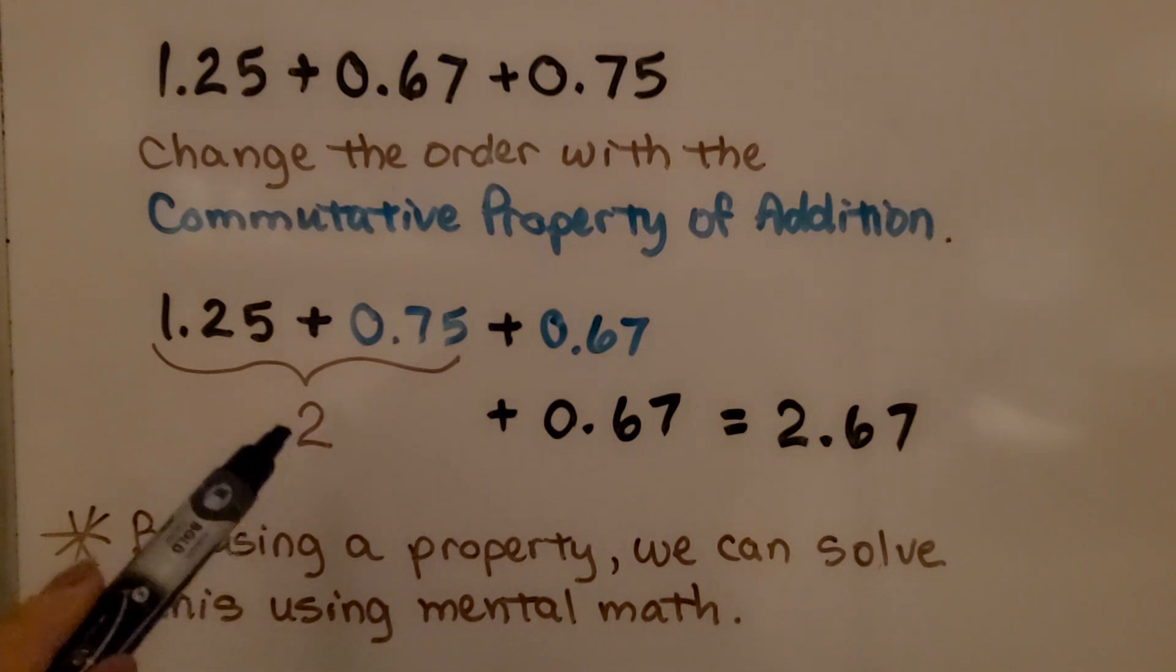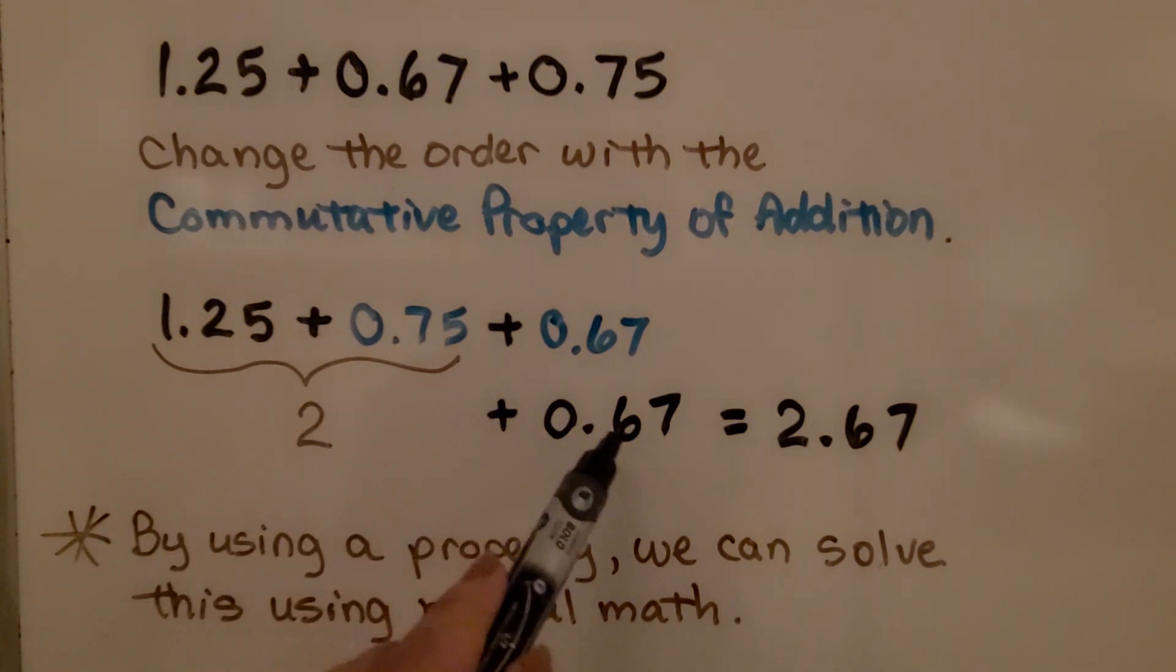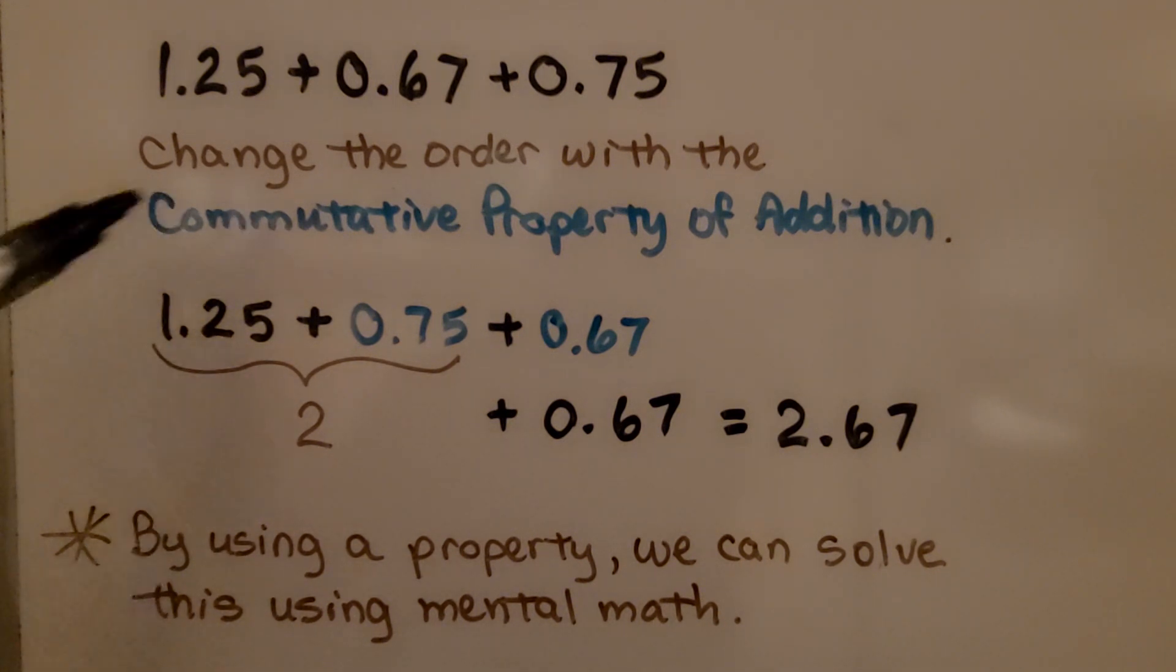Now we can just add this 2, this whole number, to the 0.67 and have 2.67. By using a property, we can solve this using mental math. And you might even do this with mental math without even realizing you're using the commutative property of addition.